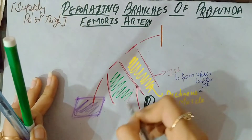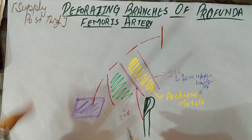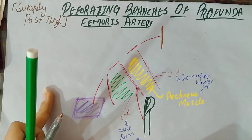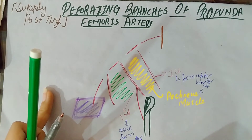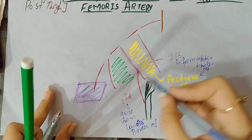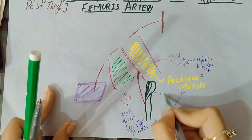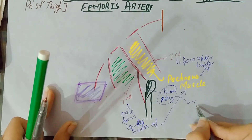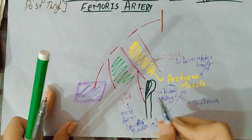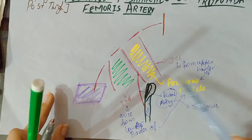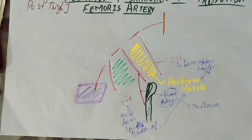The second perforating branch arises from the lower border of the pectinous muscle. The second perforating branch also gives a nutrient artery — this is our nutrient artery to the femur. So the second perforating branch arises from the lower border of the pectinous muscle and also gives a nutrient artery to the femur.